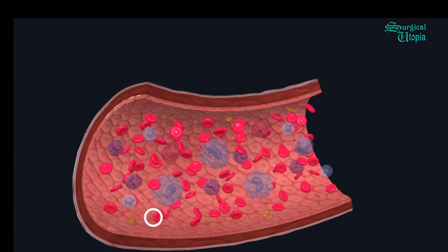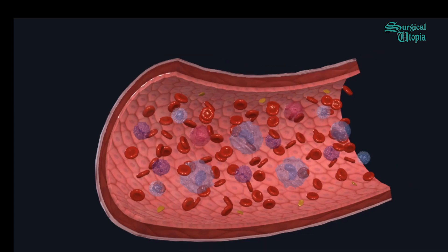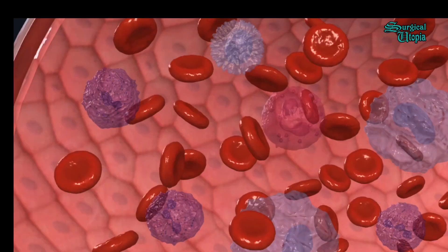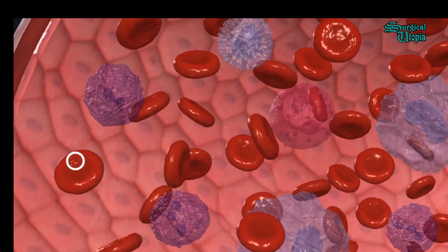So it is thicker at the edge and thinner in the center. Their function is to transport oxygen from the lungs to the cells and remove carbon dioxide from cells and transport it back to the lungs. Here you see a closer picture showing the thinner center and thicker edge, giving it the biconcave shape.